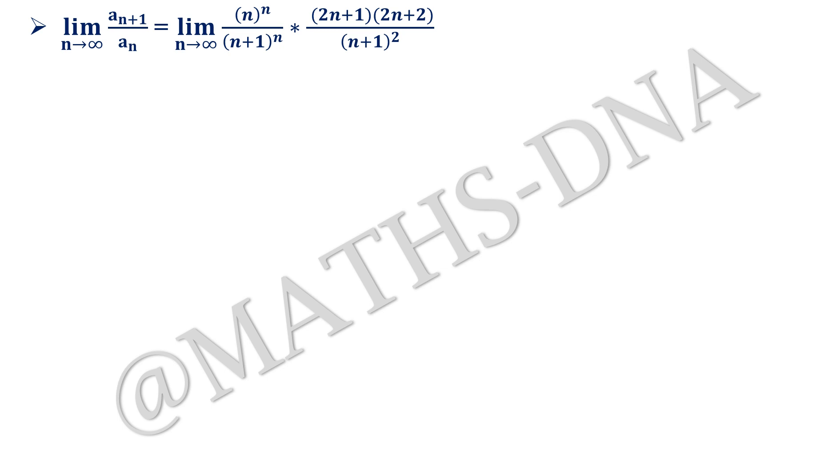We will be using our formula over here, but before that let us take the n common and cancel it out. So we get 1 upon 1 plus 1 by n whole raised to n, into 2 plus 1 by n, into 2 plus 2 by n. And we know 1 plus 1 by n whole raised to n equals e.